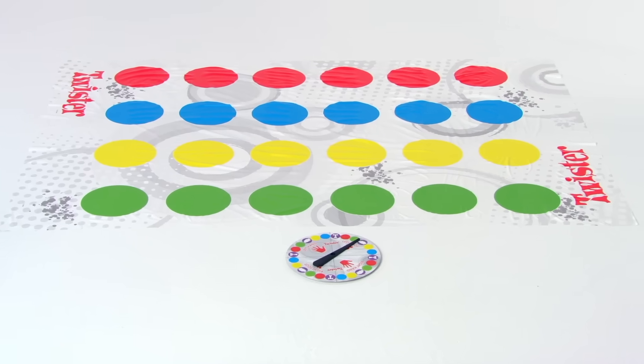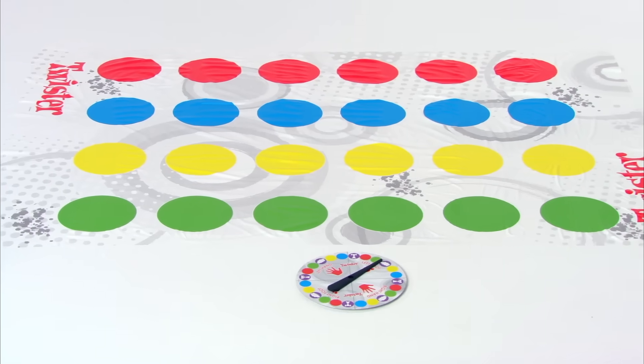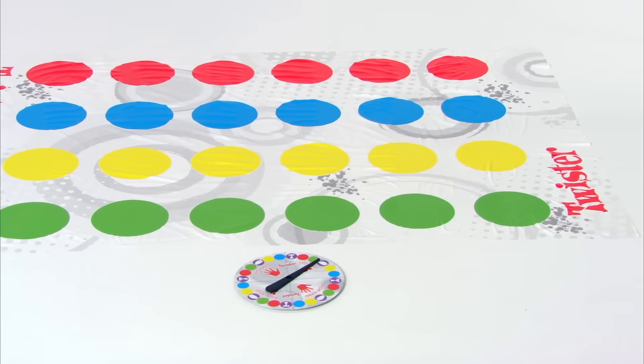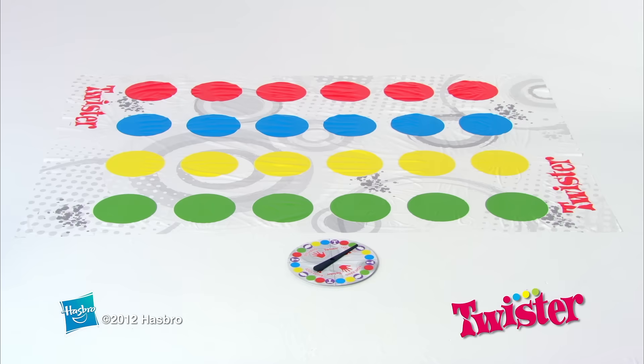Twister is for two or more players age 6 and up and comes with one Twister mat, one spinner, and instructions. Adult assembly is required.